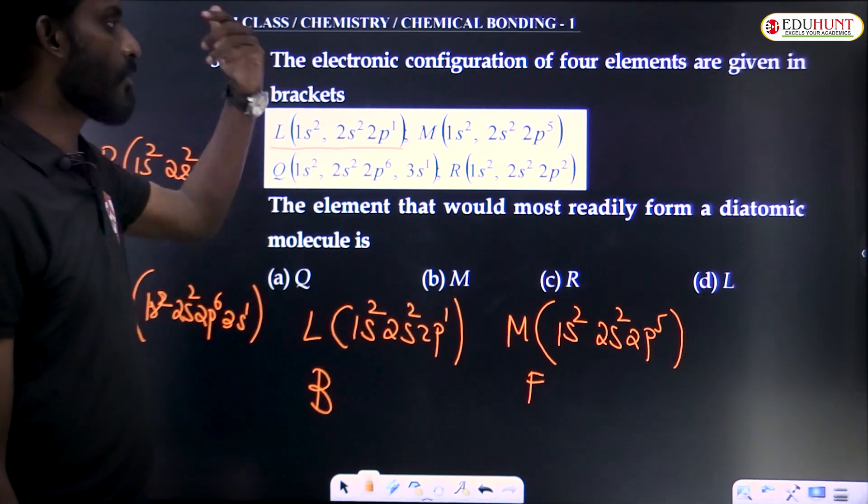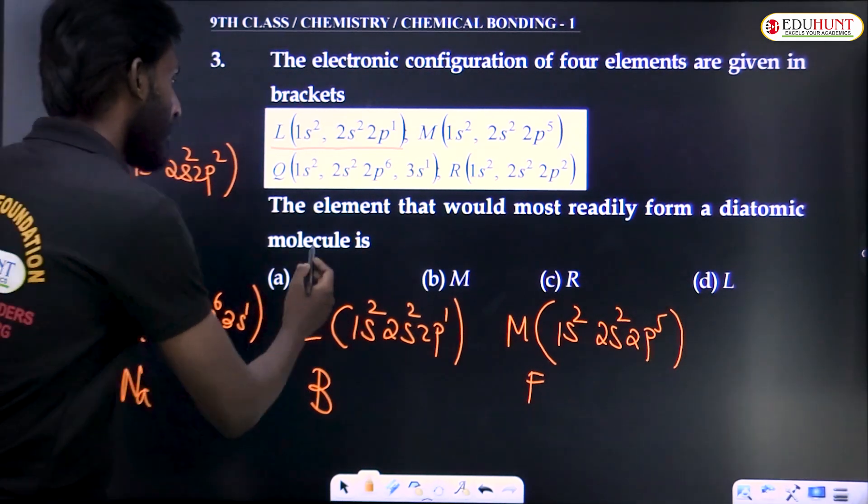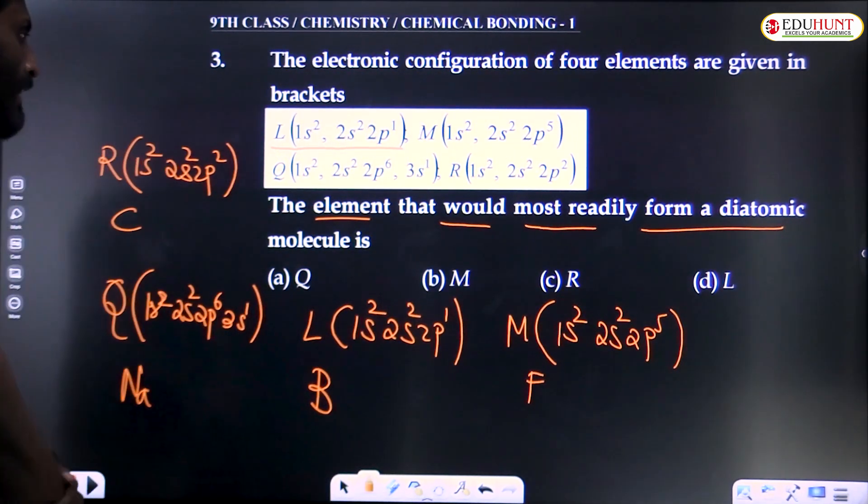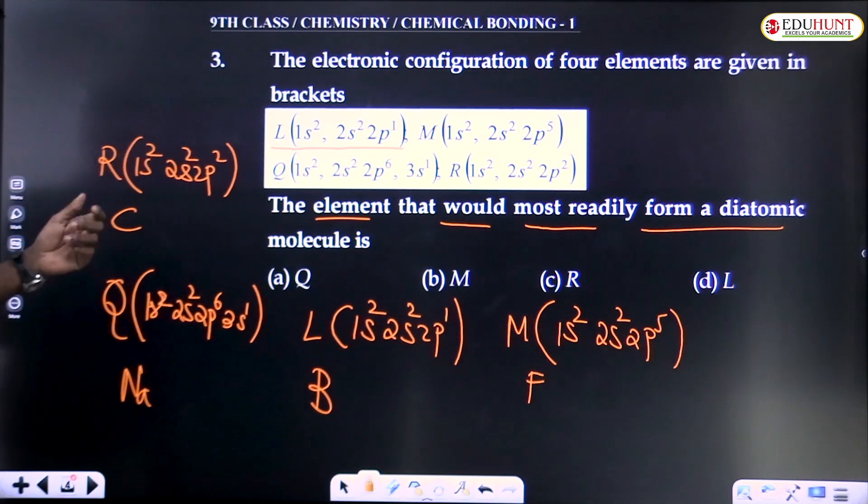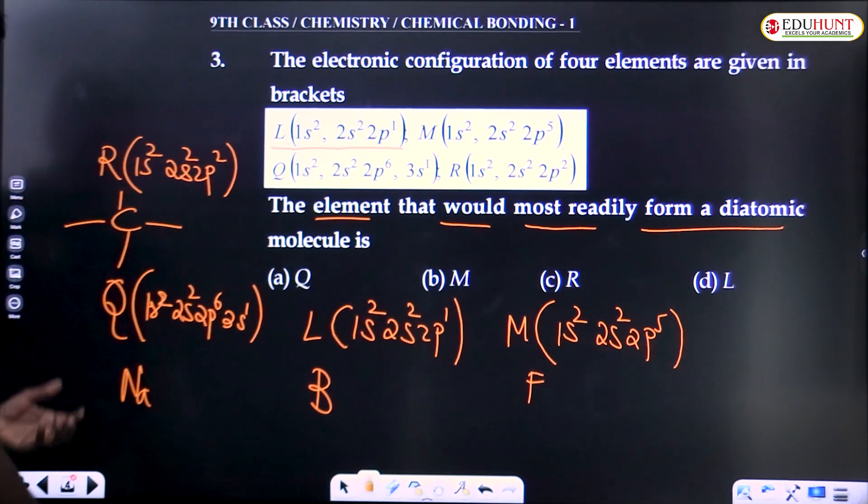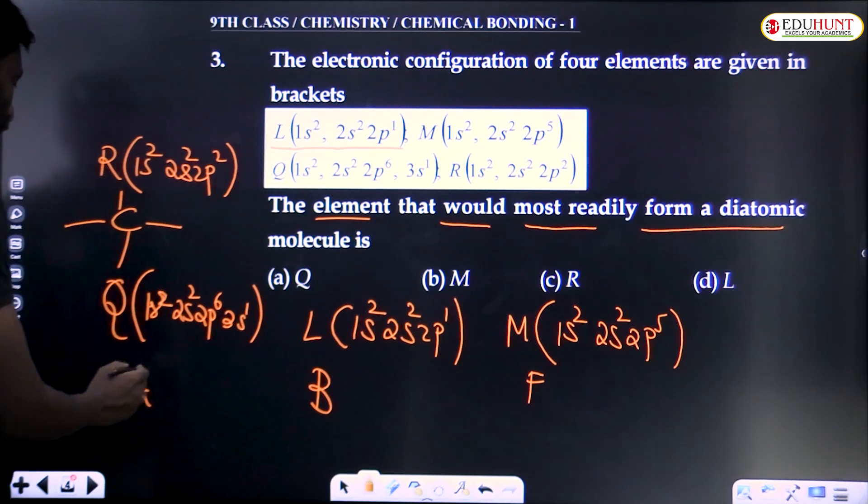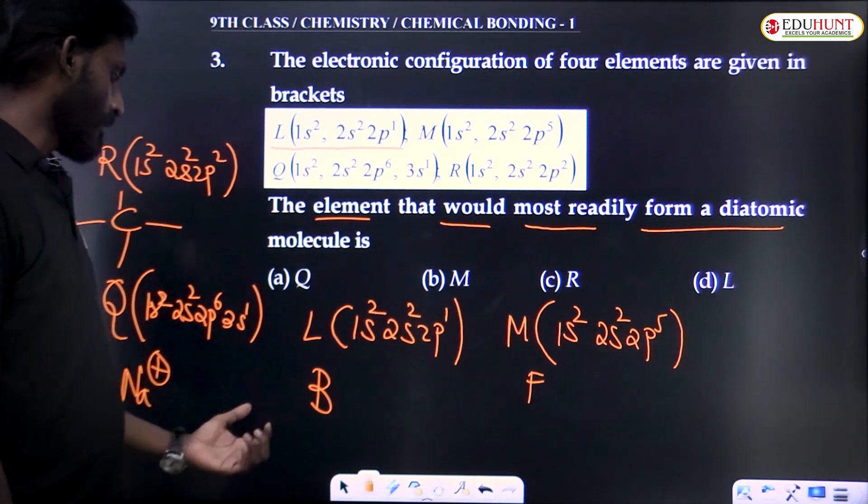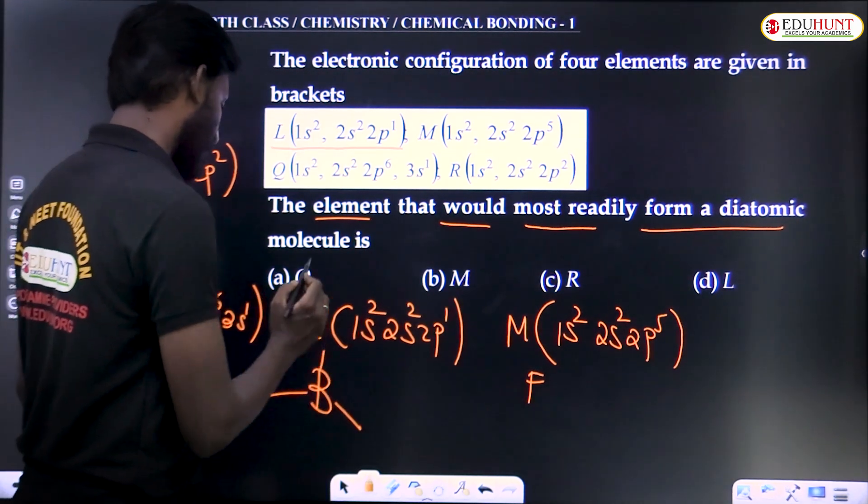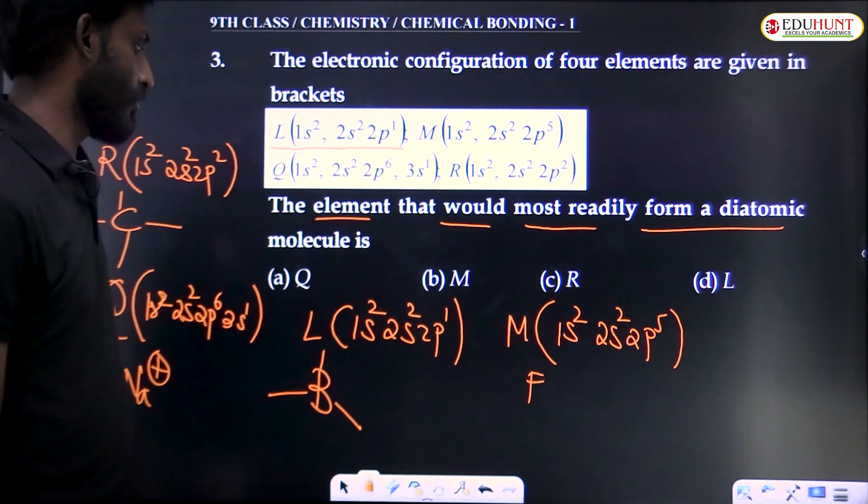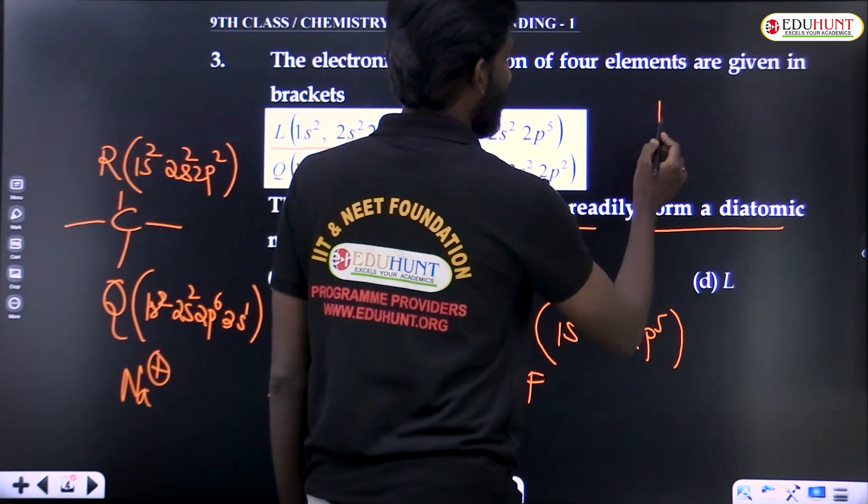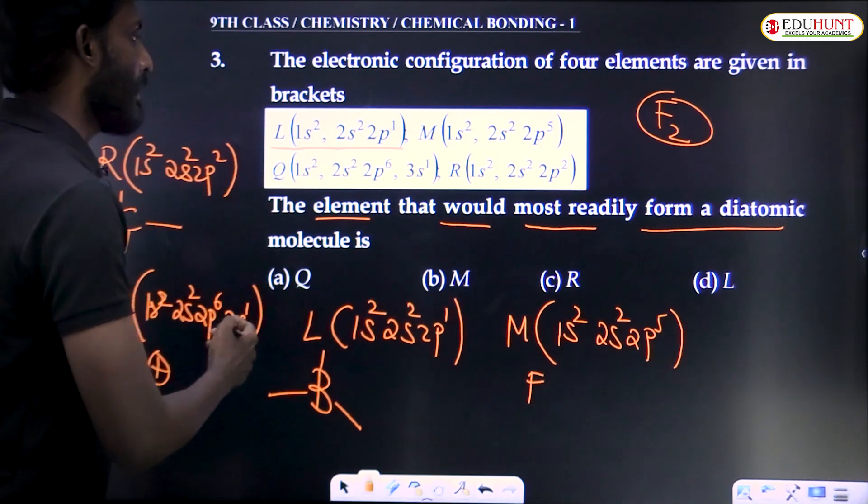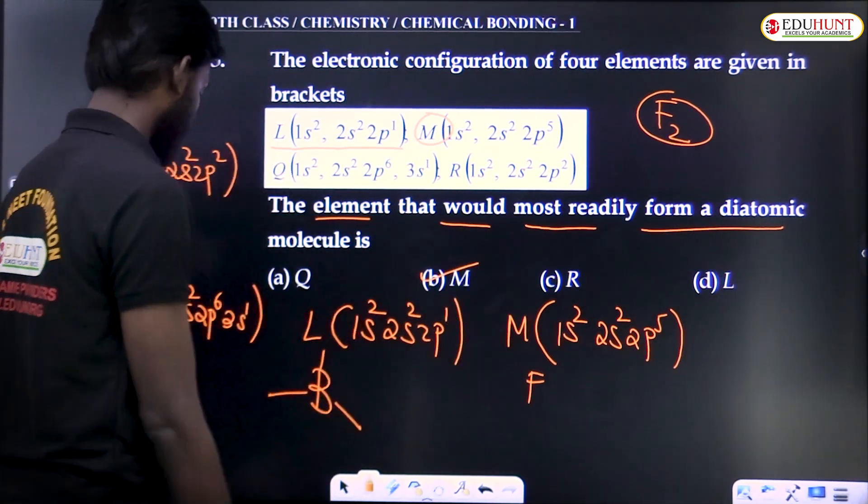The question is, the element that would most readily form a diatomic molecule. Diatomic molecule is which one? Carbon in general is tetra-atomic, tetra-valency. Sodium forms Na+ ionic compounds. And boron is triatomic, three bonds form. And fluorine, fluorine readily forms F2 very easily. So our answer is fluorine.